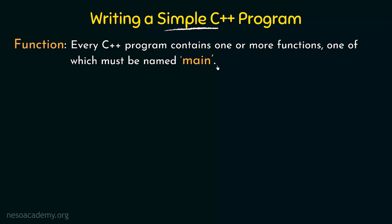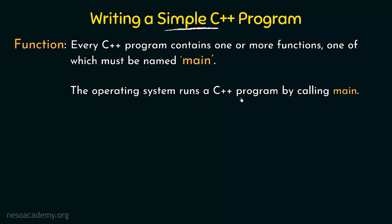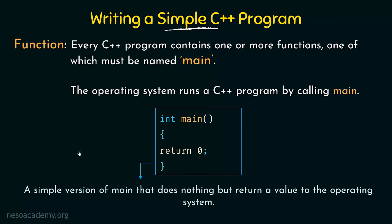The main function is one of the most important functions and the operating system runs a C++ program by calling main. Whenever you run a C++ program the first function that is going to be called is the main function. From the name itself, just try to understand — main means it is the main thing. So the main function is going to be called first whenever we run a program in C++. Keeping that in mind, let us see the structure of a main function — how it looks and what things it contains. Here we see a simple version of main that does nothing but return a value to the operating system.